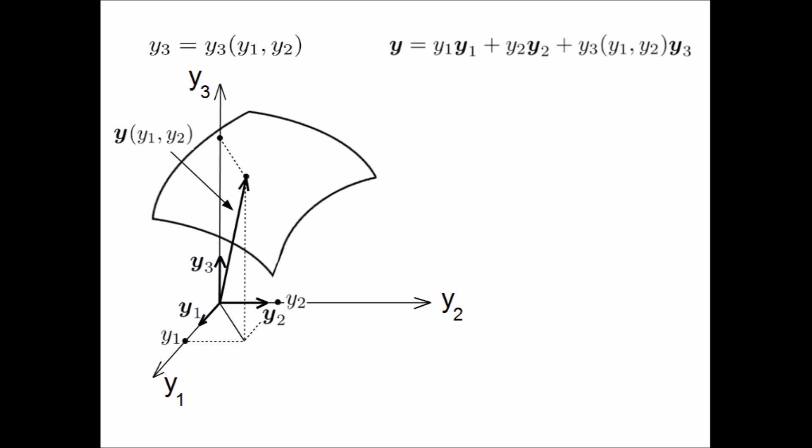Let us begin by drawing a random surface in three dimensions, labeling the three Cartesian coordinates as y1, y2, and y3. We can define this surface by making one of the coordinates a function of the other two coordinates, for example, the y3 coordinate as a function of y1 and y2. Every point on this surface is then defined by a position vector y, where the bold face y1, y2, and y3 are unit vectors.